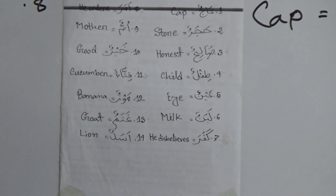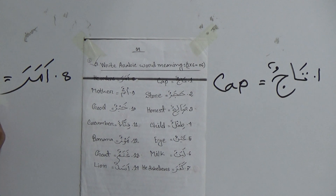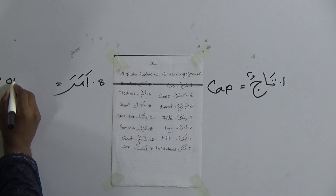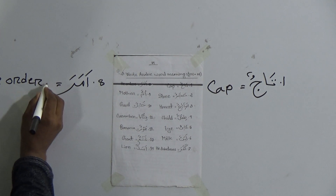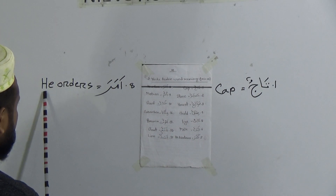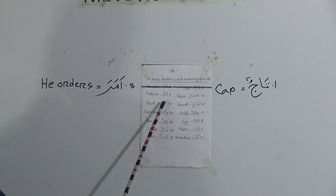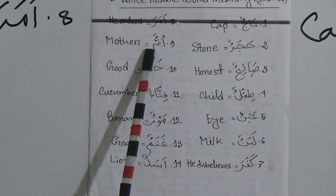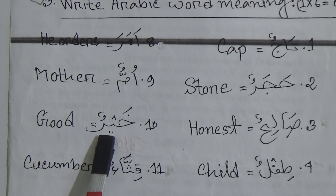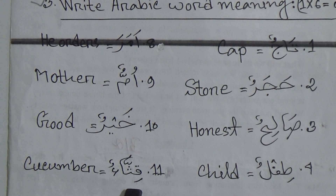Number 8: Amara. Amara means he orders. Okay, Amara means he orders. Then number 9.